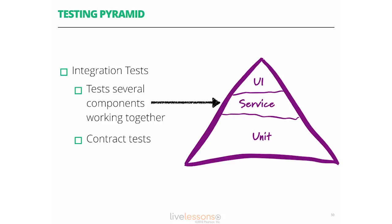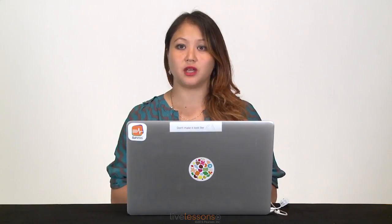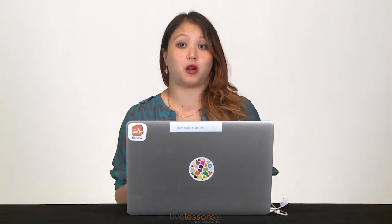Now let's look at integration tests, which some people call service layer tests. These tests verify that several components can actually work together. In our login flow example, we want to make sure the database is talking to our services layer. In integration tests, we might have a test from the services layer asking, 'Can I talk to the database?' And if I can, that's one test. A second test might say, 'If I make a call to this particular database, I expect that information to come back as-is,' and we can assert on that.